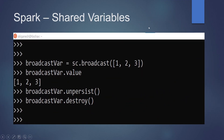Here we have created a broadcast variable using SparkContext.broadcast. To fetch the value of the broadcast variable, we use the value method. Then we call the unpersist method to release the resource occupied by the broadcast variable. To permanently release the resources, we call the destroy method.